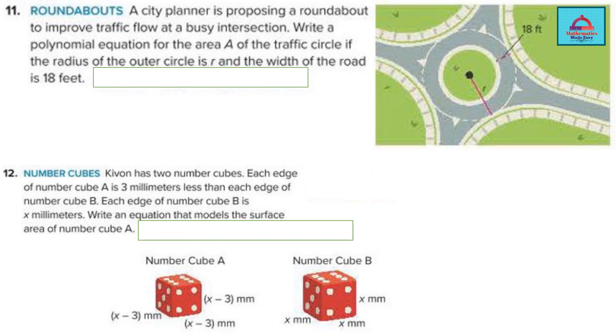We are going to cover these two questions. First, in these questions you are given figures so it's an easy question because the figure is already given to you. Let's read the problem. A city planner is proposing a roundabout to improve traffic flow at a busy intersection. As you see here it has a circle in the center and four directions. These four roads are governed by this circle and it's an intersection where these four roads are meeting. The common point is the center of the circle.